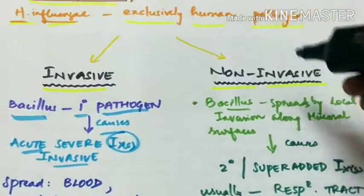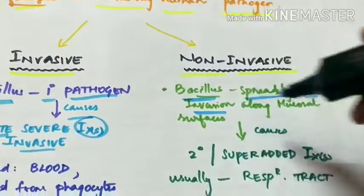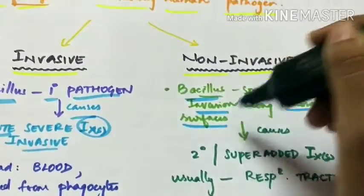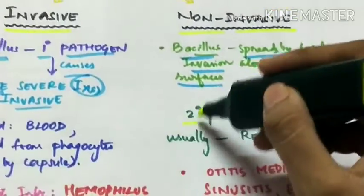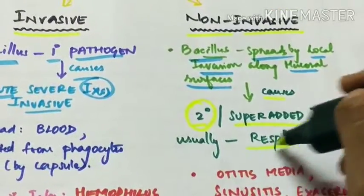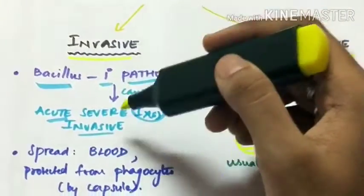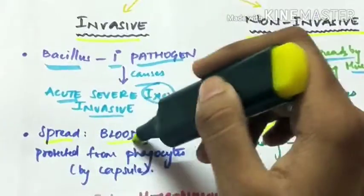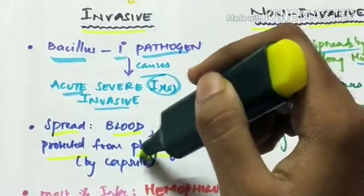In non-invasive, the bacillus spreads by local invasion along the mucosal surfaces. It thereby causes secondary or super added infections, usually respiratory tract infections. In invasive, the bacillus spreads by blood and they are protected from phagocytosis by their capsule.